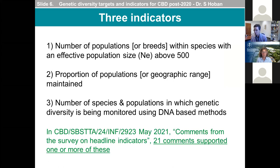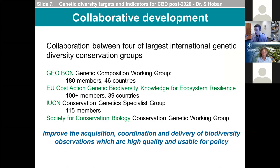In recent comments from parties on the indicators, there were 21 positive comments supporting one or more of these indicators and no negative comments, though several comments requested more guidance. The development of these indicators is a collaboration between the four largest genetic diversity conservation groups globally, led by Geobond, the global community of practice and a longtime partner of the CBD. This work is consistent with Geobond's mission to enable the use of biodiversity observations to support policy, monitoring, reporting, and intervention.